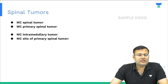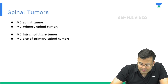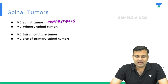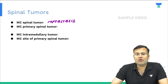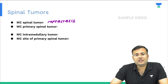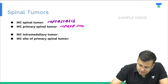Now spinal tumors. Most common brain tumor as well as most common spinal tumor — the answer is the same: metastasis. Most common primary spinal tumor is nerve sheath tumor.